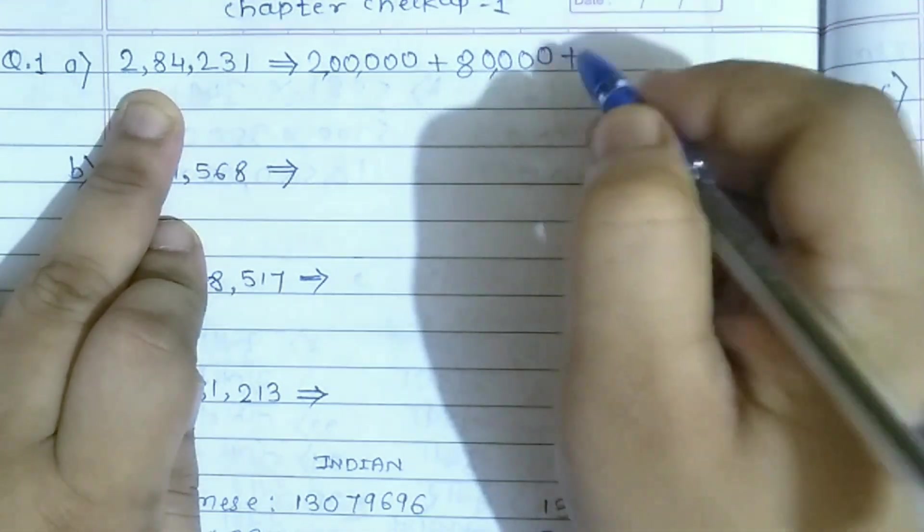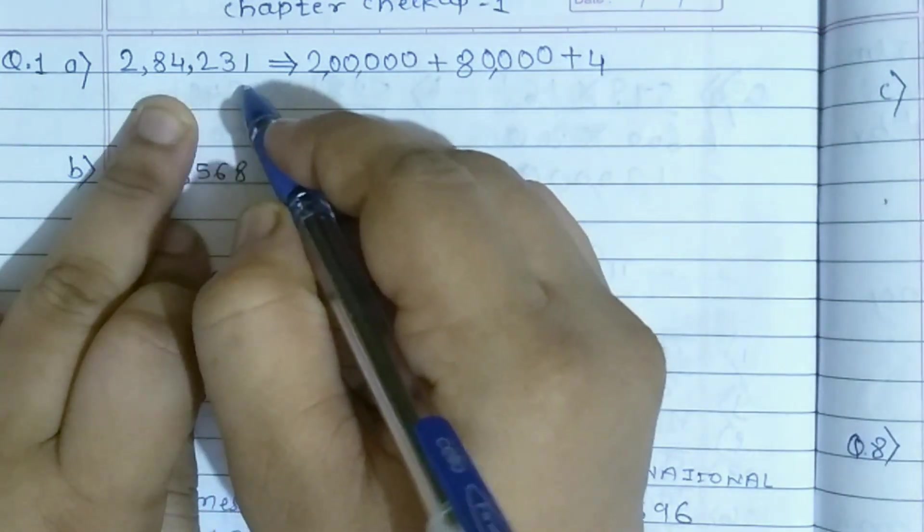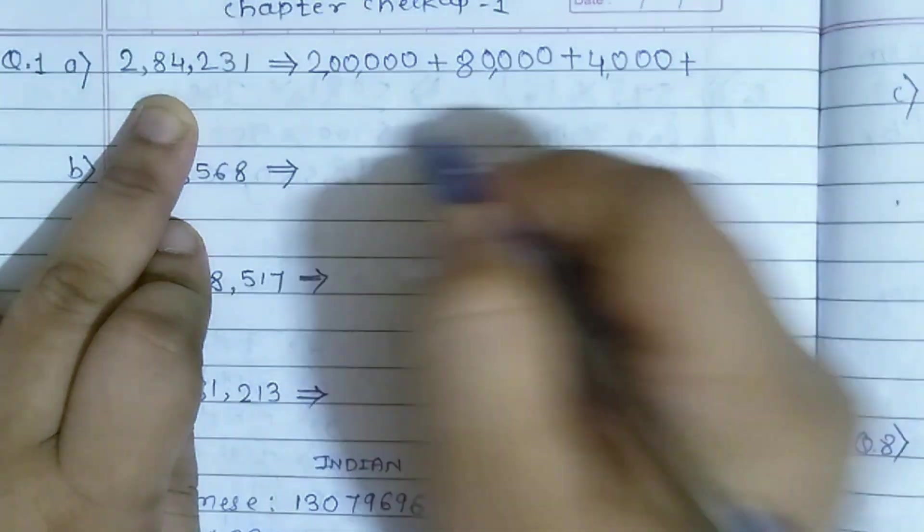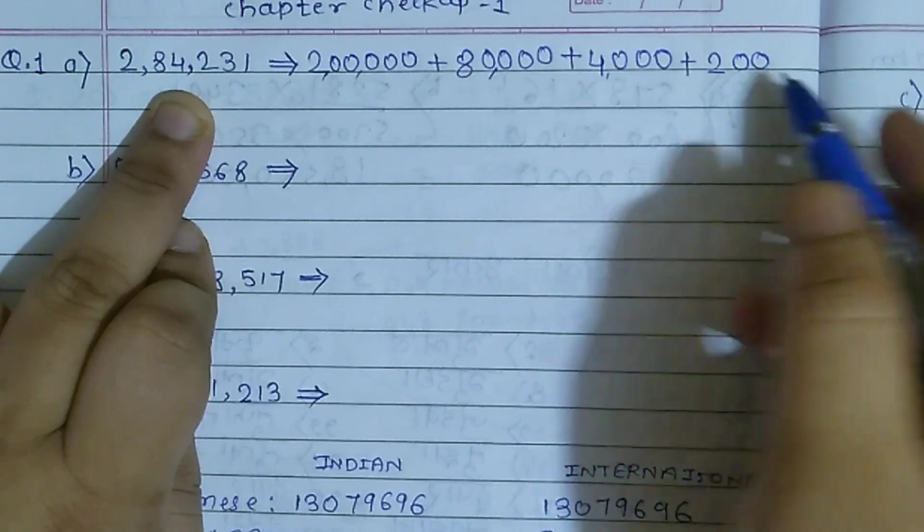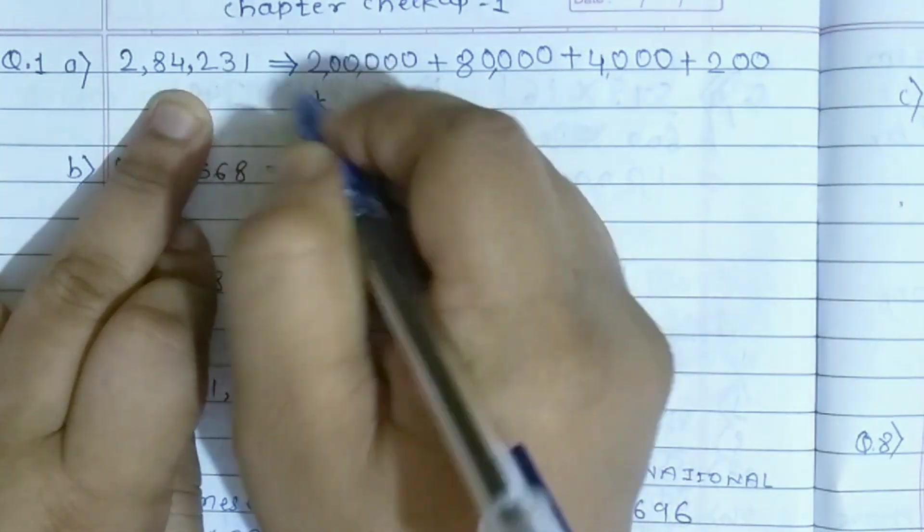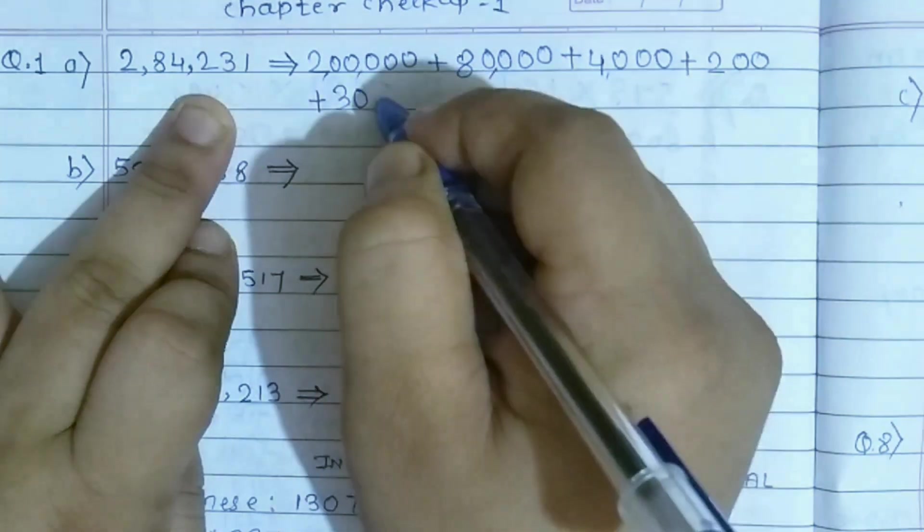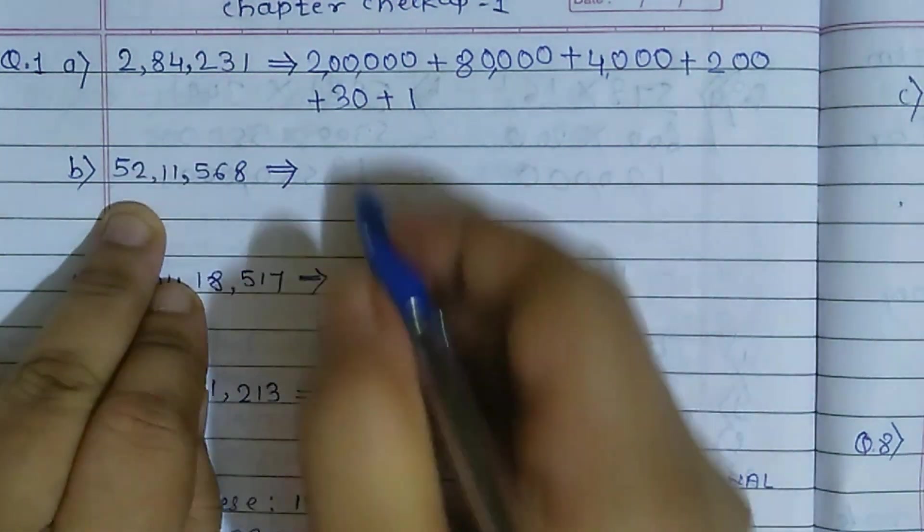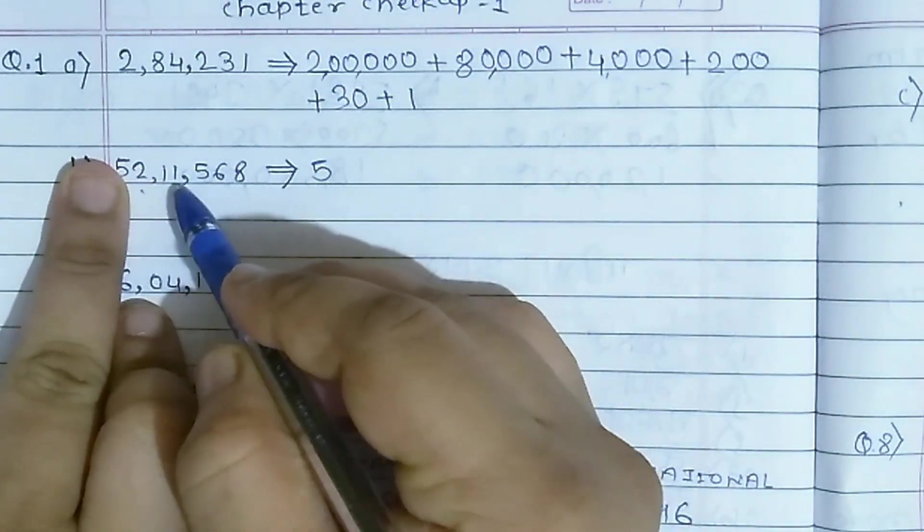Plus next number is 8, so after 8 there are 4 digits, so put 4 zeros. It will become 80,000. Plus 4, after 4 there are 3 digits, so put 3 zeros, so 4000. Next, after 2 there are 2 digits, so put 2 zeros.